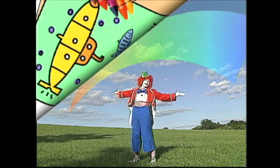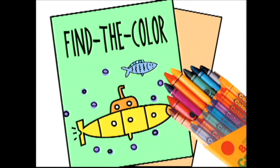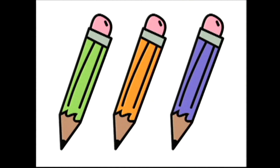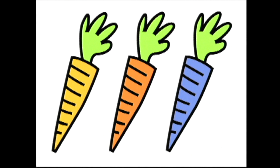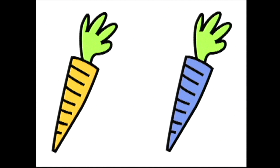I've just taken my crayons and colored some pictures. I'd like you to look at the pictures and play a game. Here is a picture of three pencils. I colored one of the pencils green. I'd like you to find the green pencil. Do you see it? Here it is — the green pencil! Look at the picture of these three carrots. One of the carrots is colored orange. Can you find the orange carrot? Here it is — the orange carrot!